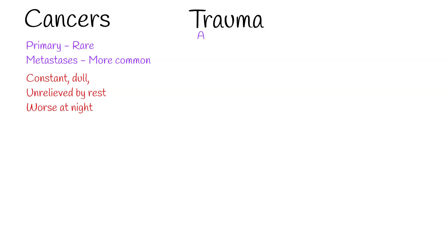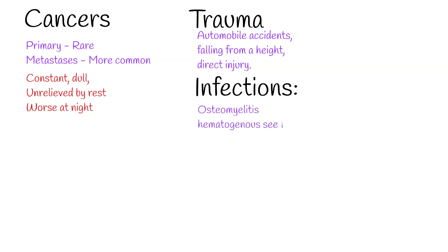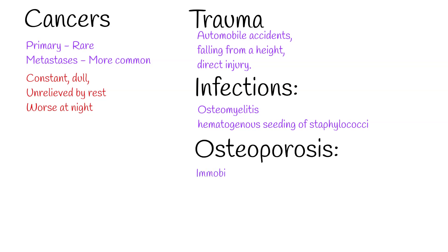Other causes of lower back pain include trauma, which can result from automobile accidents, falling from a height, or direct injury. CT scan can be used for diagnosis, though on minor trauma a CT scan is not needed. Back pain can also be caused by infections — called vertebral osteomyelitis — often caused by hematogenous seeding of staphylococci. MRI and CT scan are sensitive and specific for early detection of osteomyelitis. Osteoporosis due to immobilization, osteomalacia, or the postmenopausal state can weaken the vertebral body, causing compression fractures and pain.